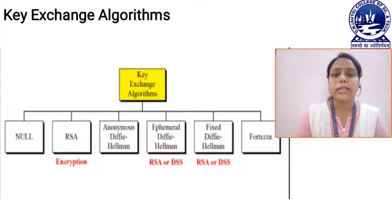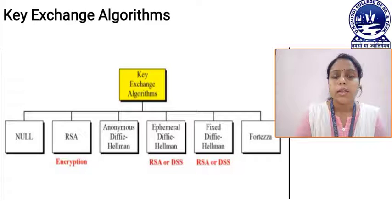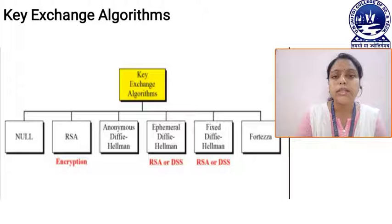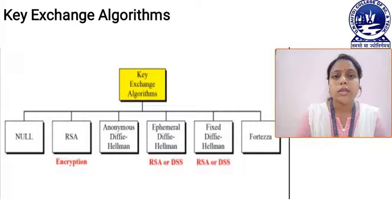Next are the key exchange algorithms. This figure shows the different key exchange algorithms. The first algorithm is null, then RSA, then anonymous Diffie-Hellman, then ephemeral Diffie-Hellman with RSA or DSS, then fixed Diffie-Hellman, and last one is Fortezza.